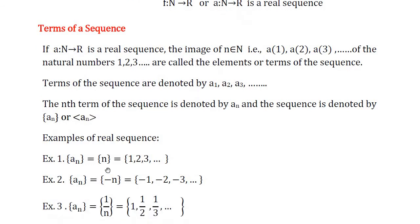Now we take some examples of sequences. First: {aₙ} where aₙ = n. We put n = 1, 2, 3, and so on to get the sequence. Putting n = 1 gives the first term 1; n = 2 gives the second term 2; n = 3 gives the third term 3, and so on. By substituting values of n we generate the sequence.